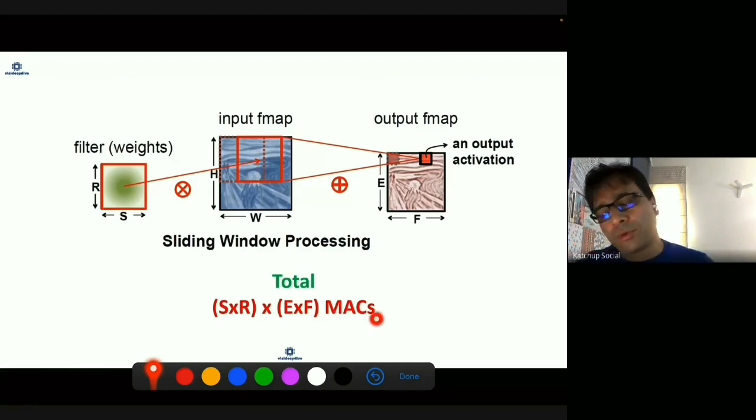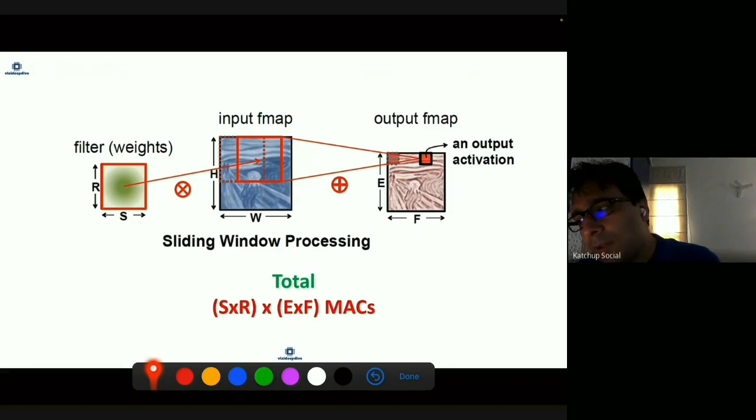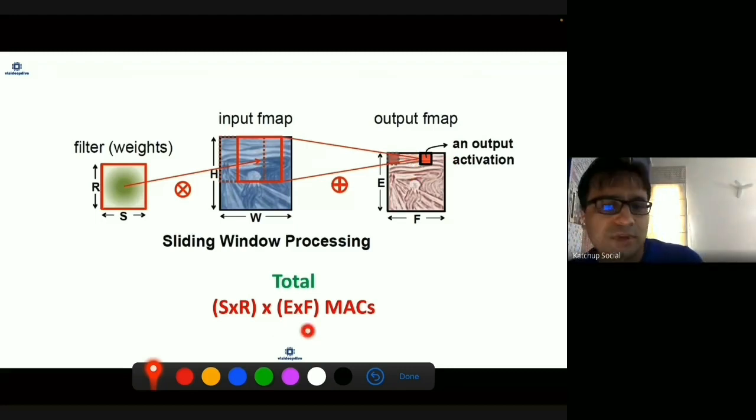If your input size was high, with a lot of pixels or a very high resolution image, you'll have to do more operations. How many outputs you're generating also matters - if outputs were lesser in size, you'd have to do fewer MACs. It's basically what filter you're using and how many operations you're doing to generate an output.